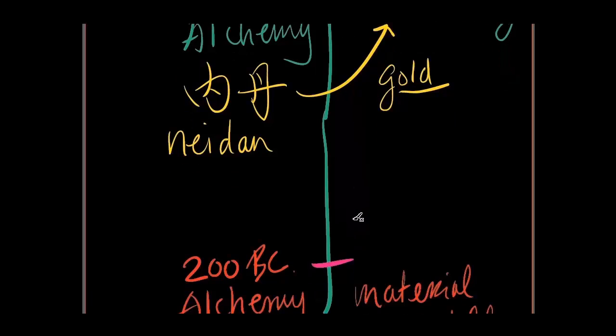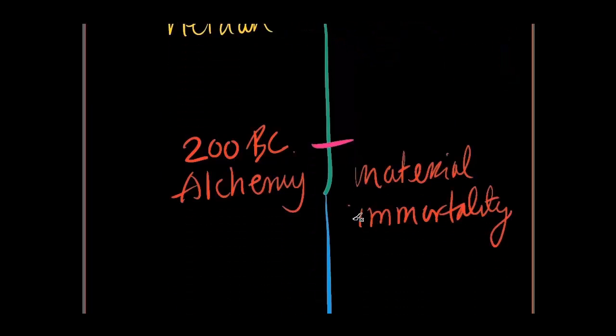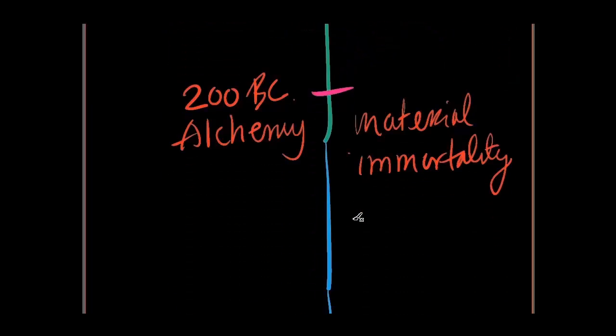Let's go back a little further to 200 BC, almost 2000 years. There was no inner alchemy. It was just alchemy which is considered a kind of material immortality.